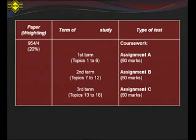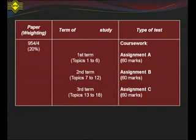Paper 4 is coursework comprising three assignments, each based on topics 1 to 6, topics 7 to 12, and topics 13 to 18 respectively. The percentage weighting of Paper 4 is 20%.